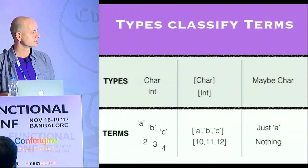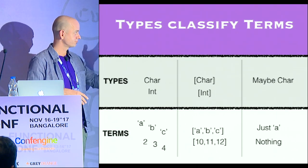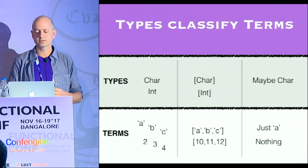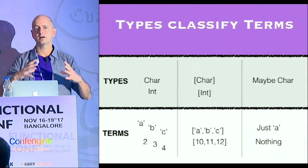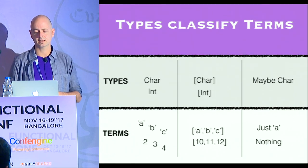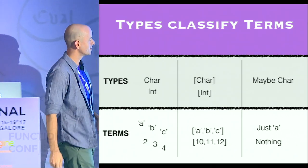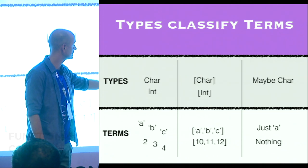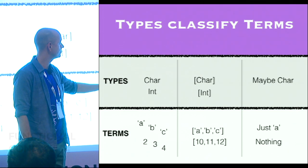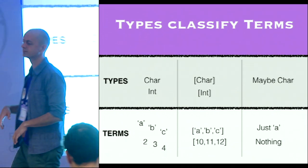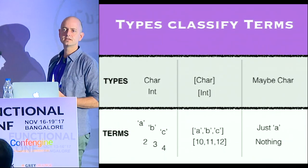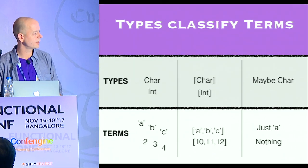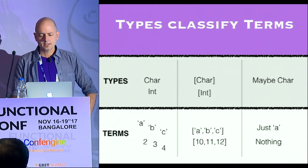In all statically typed languages, you get this fact that types classify terms. Terms are values and types are families of values. This is all pretty obvious kinds of types, and this is the type I'm going to carry around a little bit in this talk. It's a Maybe type. Maybe something means it's a way to express nullability or optionality of a term. So Maybe Char could be just Char A or nothing.